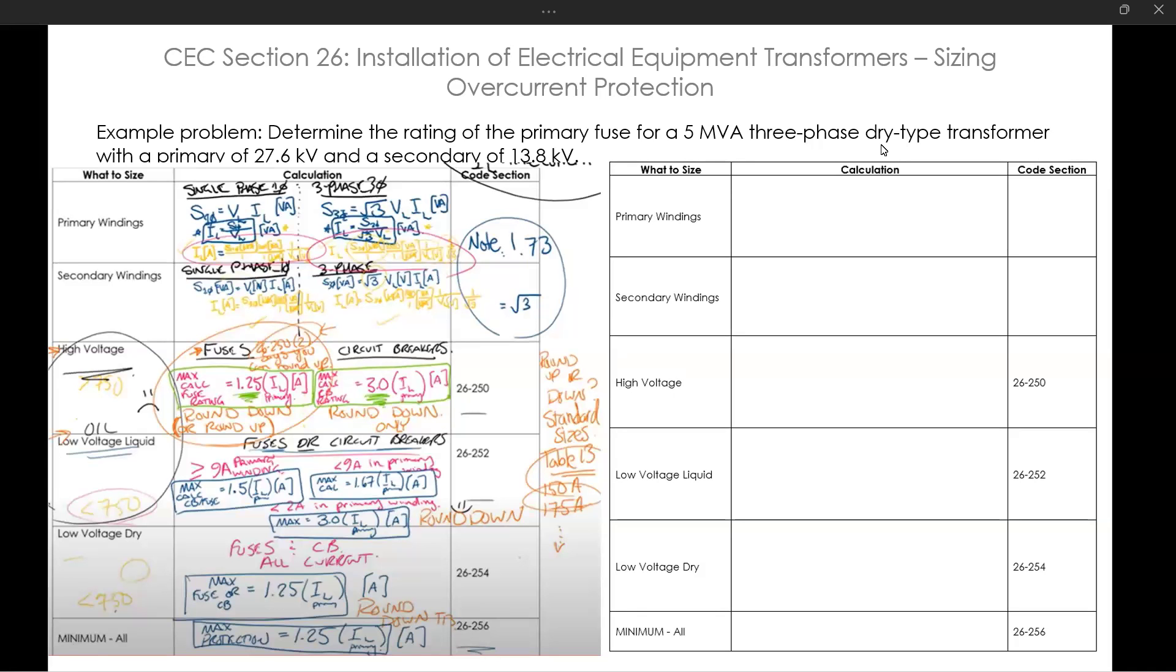I've had a lot of requests for an example problem that goes over rule 26-250, which is the overcurrent protection that is going to protect transformer circuits. So I'm going to do that here.